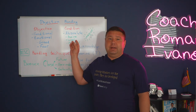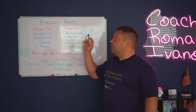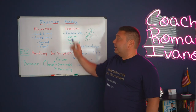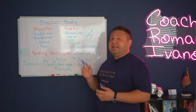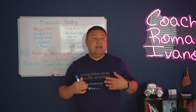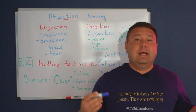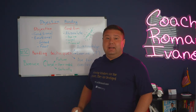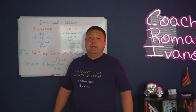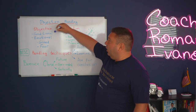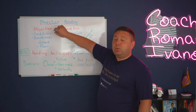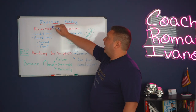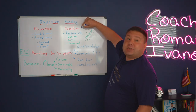So we need to examine the objections we're getting to find out if it's a condition or an objection. Conditions we cannot overcome and we cannot move forward. However, if we find that we're dealing with objections, they also can be conditional. And this is where the trick is — a lot of agents misunderstand conditional objection and condition.